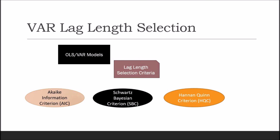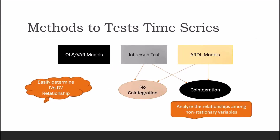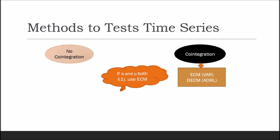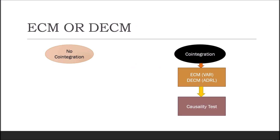If your Johansen or ARDL model results show that variables are co-integrated, proceed to further analysis. Co-integration means that if your xt and yt variables are non-stationary but the error term et is stationary, then xt and yt are said to be co-integrated. If xt and yt are both non-stationary and co-integrated, use an error correction model instead of VAR. For mixed variables, a dynamic error correction model can be derived from ARDL through a simple linear transformation. The ECM integrates short-run dynamics with long-run equilibrium without losing long-run information, and avoids problems such as spurious relationships resulting from non-stationary time series data.